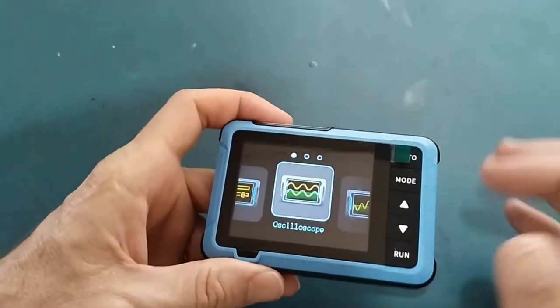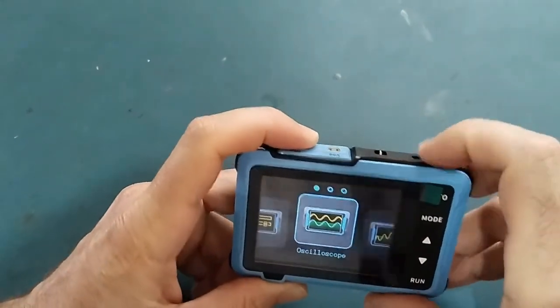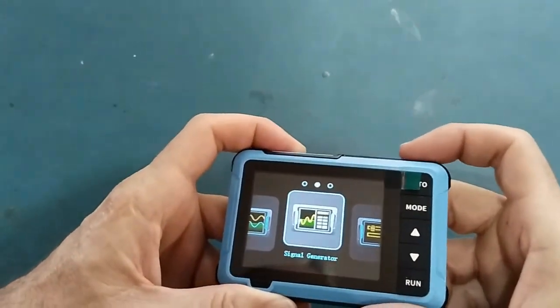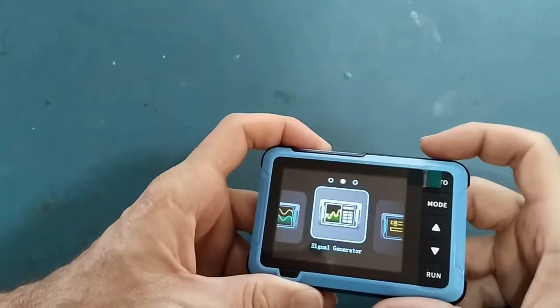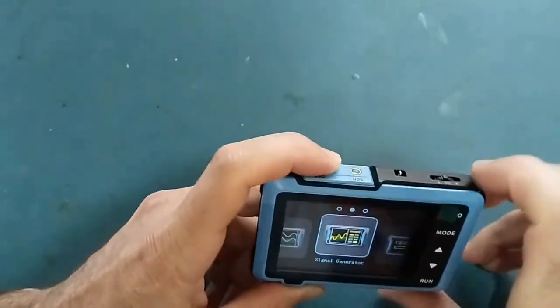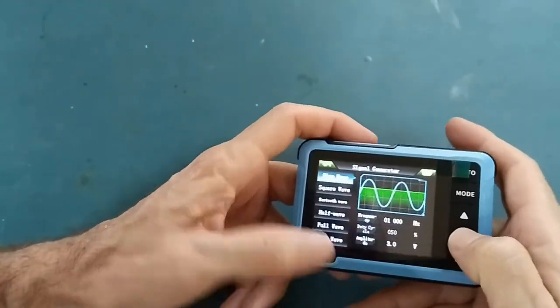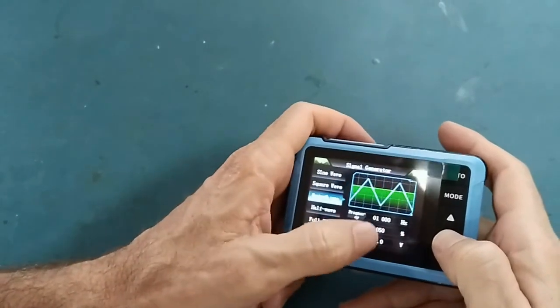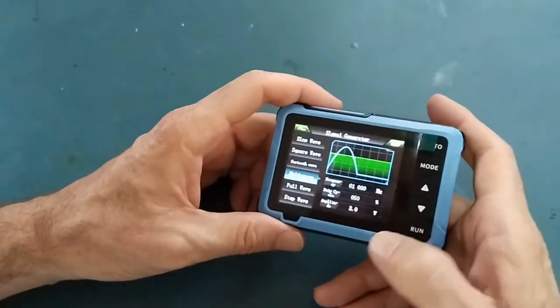When you switch on, you get this menu and by using the scroll wheel at the top, you can select between signal generator, oscilloscope, or settings. If I go to signal generator and press the button, the scroll wheel with my finger, I can select the wave style, frequency, and all the other characteristics of the wave.